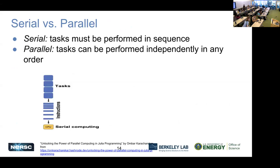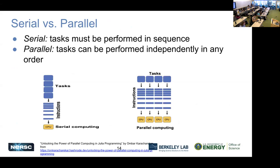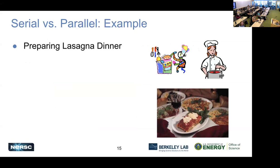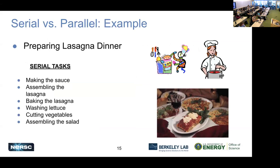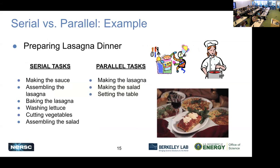We have a diagram here. If we just had one CPU, we'd have to do all tasks in order, even if the order doesn't matter. But if we can do it in parallel, we can do them all at the same time and get work done quicker. In the lasagna example: serial tasks are making the sauce, assembling, and baking. But making the lasagna and making a salad are independent tasks — it doesn't matter which you do first because we'll get to the same place.